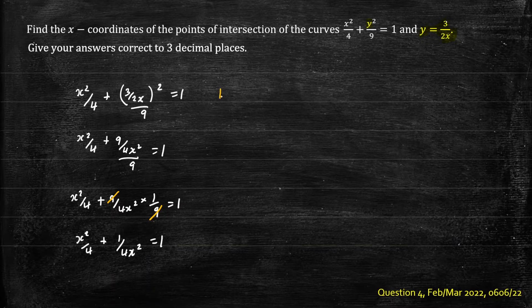To make life easier we'll let u equals x squared. So we will replace x squared with u. So we have u on 4 plus 1 on 4u equals 1.